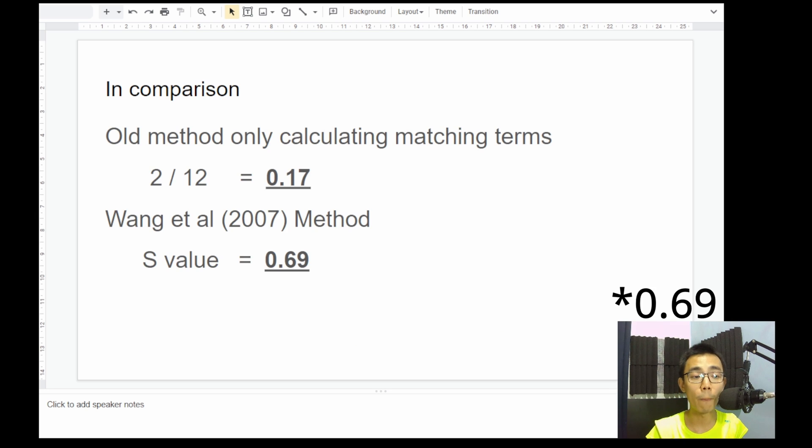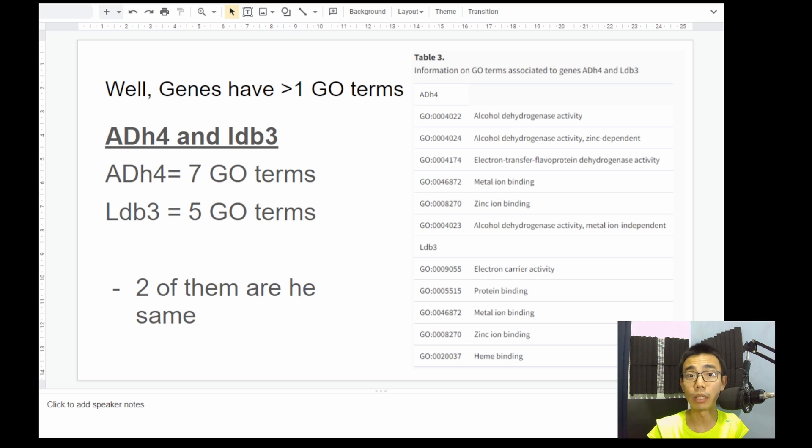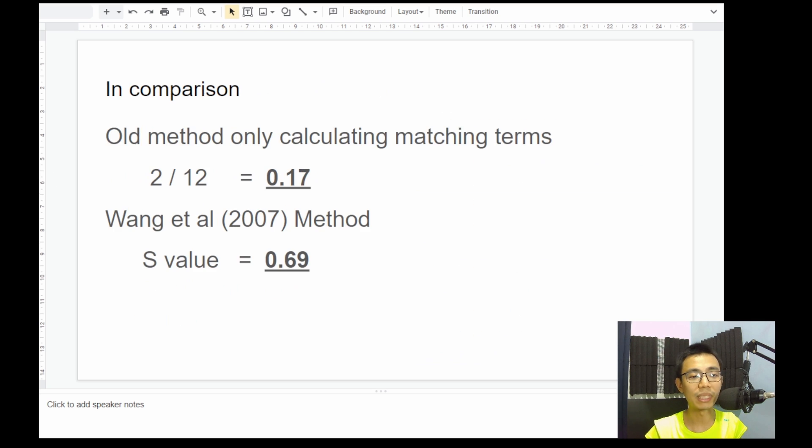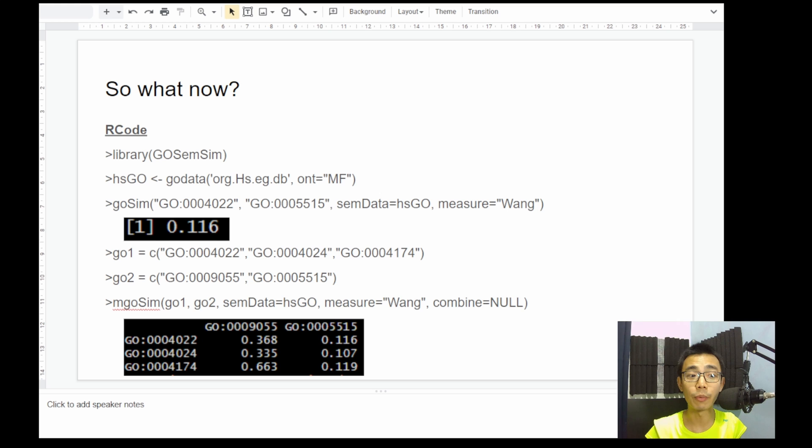So that's in comparison to the old method that we do with only the matching term, which is 0.17. But the Wang 2007 method has 0.627. And we do understand that these two genes are somewhat similar to each other. And 17% feels a little bit too low to actually properly represent the similarity in terms of function. So that's the basic concept of why we end up with this number.